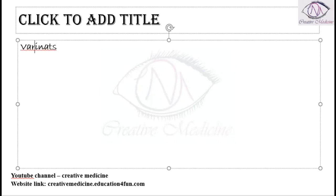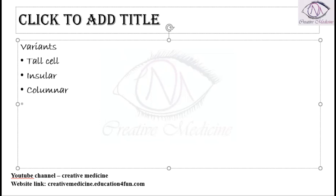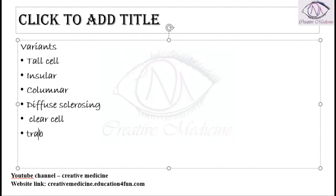Variants of papillary carcinoma include: the tall cell variant, insular variant, columnar variant, diffuse sclerosing variant, clear cell variant, trabecular variant, and poorly differentiated types. These are the different variants of papillary carcinoma.